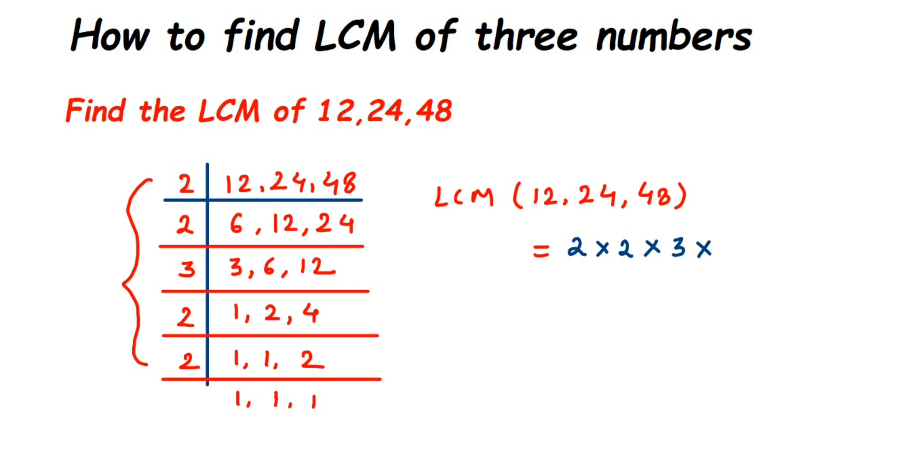So multiply them: 2 times 2 is 4, 4 times 3 is 12, 12 times 2 is 24, and then 24 times 2 is 48. So LCM of 12, 24, and 48 is 48.